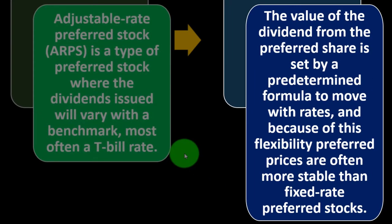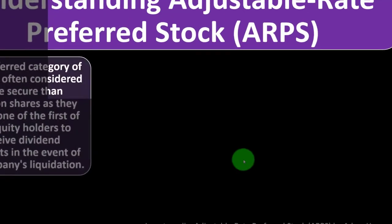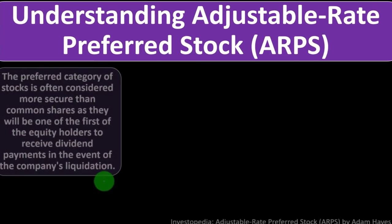The value of the dividend from the preferred share is set by a predetermined formula to move with rates. Because of this flexibility, preferred prices are often more stable than fixed rate preferred stocks.